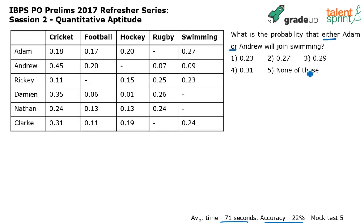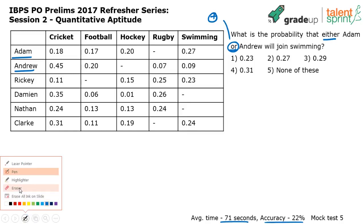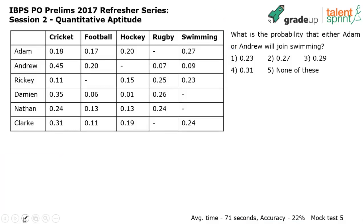Any one of these two — Adam or Andrew — must join swimming, but both cannot join. In probability, 'or' means addition and 'and' means multiplication. If both Adam and Andrew had to join swimming, we'd multiply; but since it's 'either or,' we add. However, since only one can join, we must handle the two mutually exclusive cases carefully.